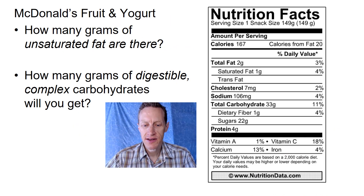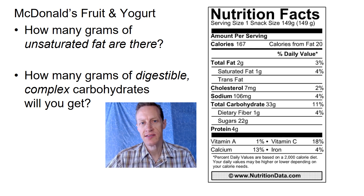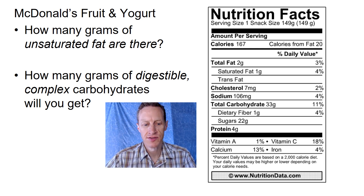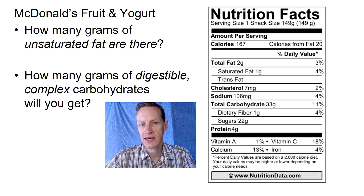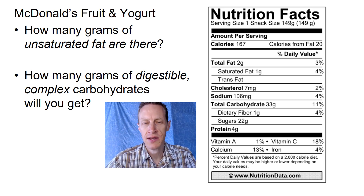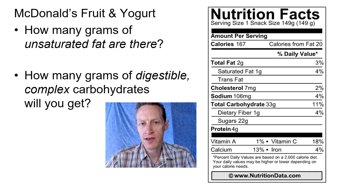Now we're going to practice. Here you'll see a label we used in the previous lesson — this is a McDonald's fruit and yogurt dessert. We're going to ask you to practice those two calculations: first, how many grams of unsaturated fat are there? And second, how many grams of digestible complex carbs will you get from eating this yogurt? Go ahead and pause the video while you work out the math, then press play when you're ready.